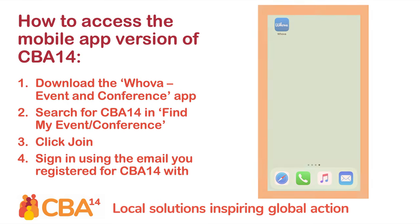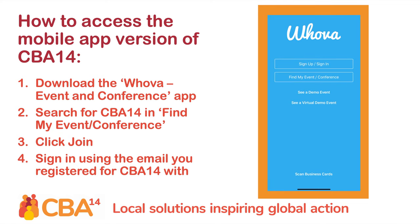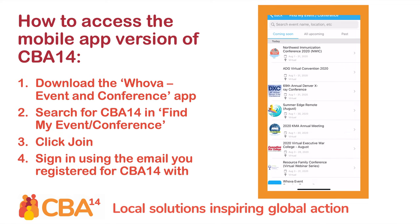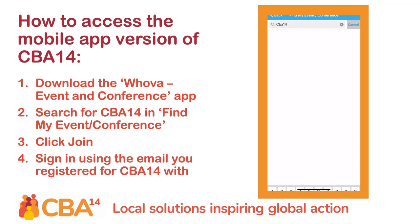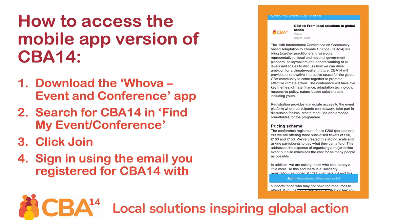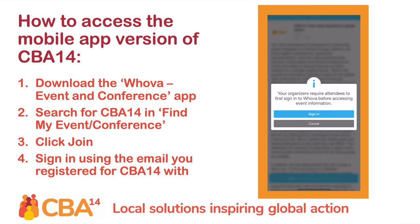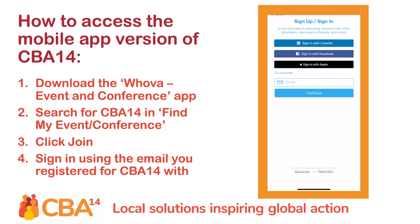To access the app version of CBA14, download the Hoover app, search for CBA14, and then sign in using the email address that you registered for a ticket with. You do not need a code to join — just make sure that you are logged in to the Hoover app with the same email address that you registered for CBA14 with.